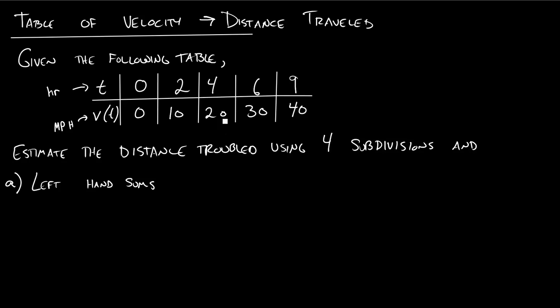At hour 4 it's going 20 miles per hour. At hour 6 it's going 30 miles per hour. At 9 it's going 40. And so we want to use these facts to say how far did I travel during my trip? And it's just going to be an estimate because we only have snapshots of how fast we are traveling.